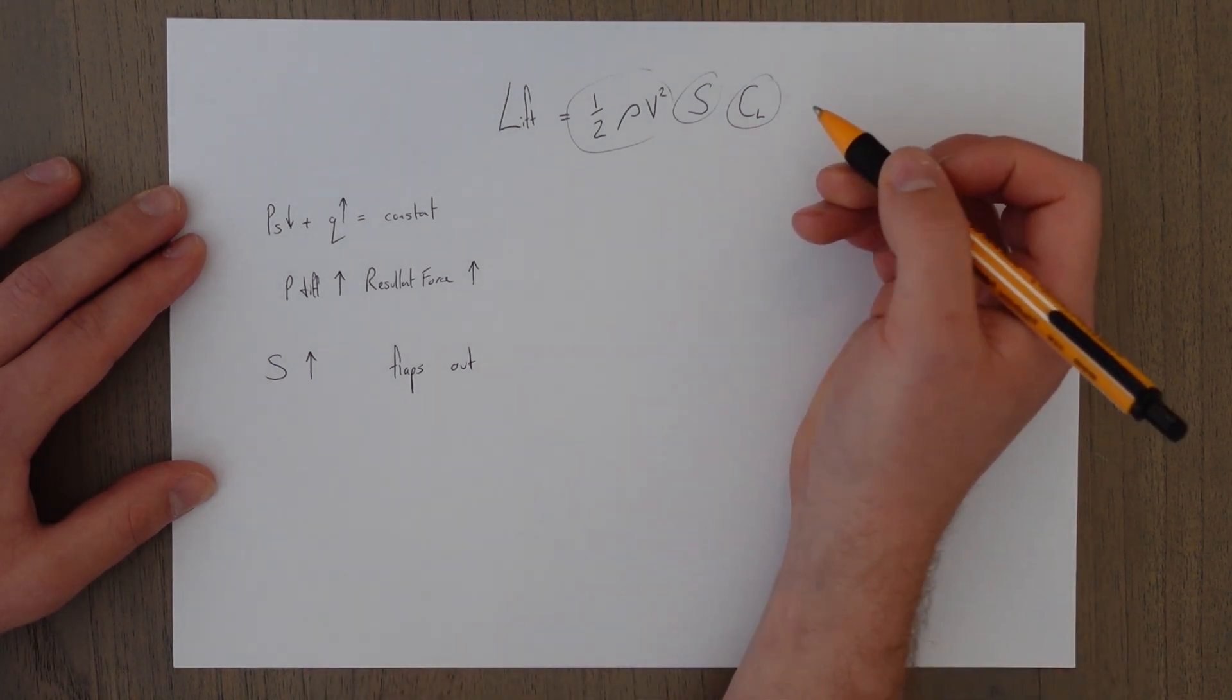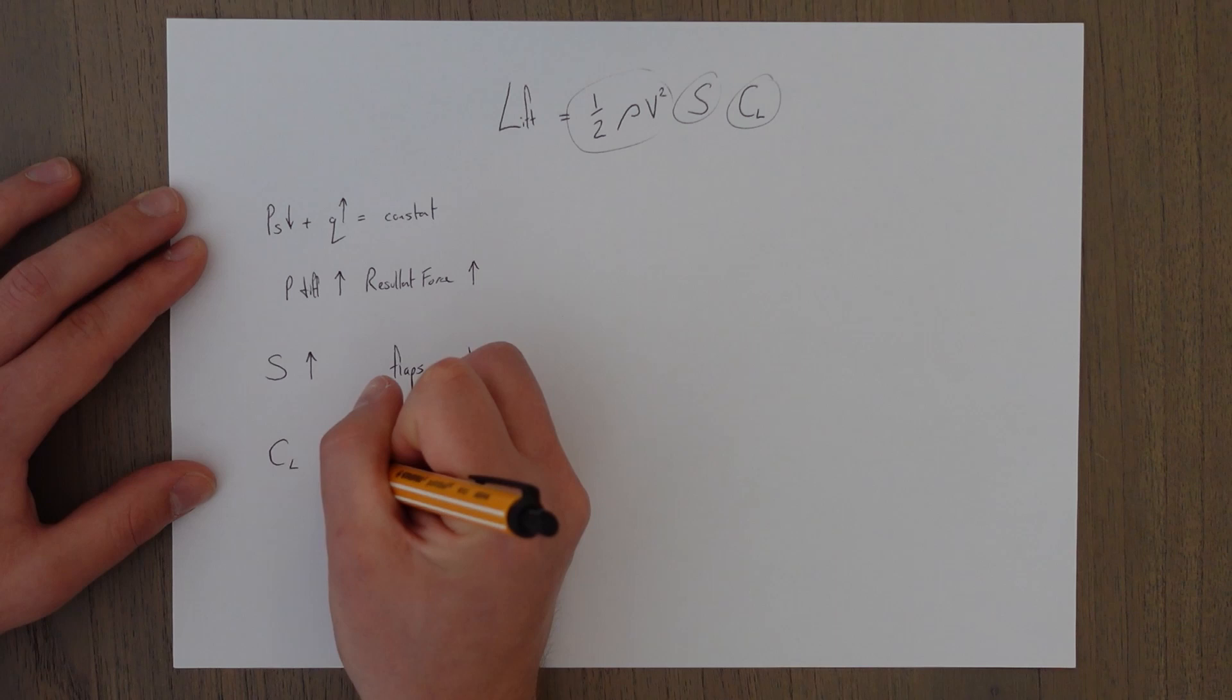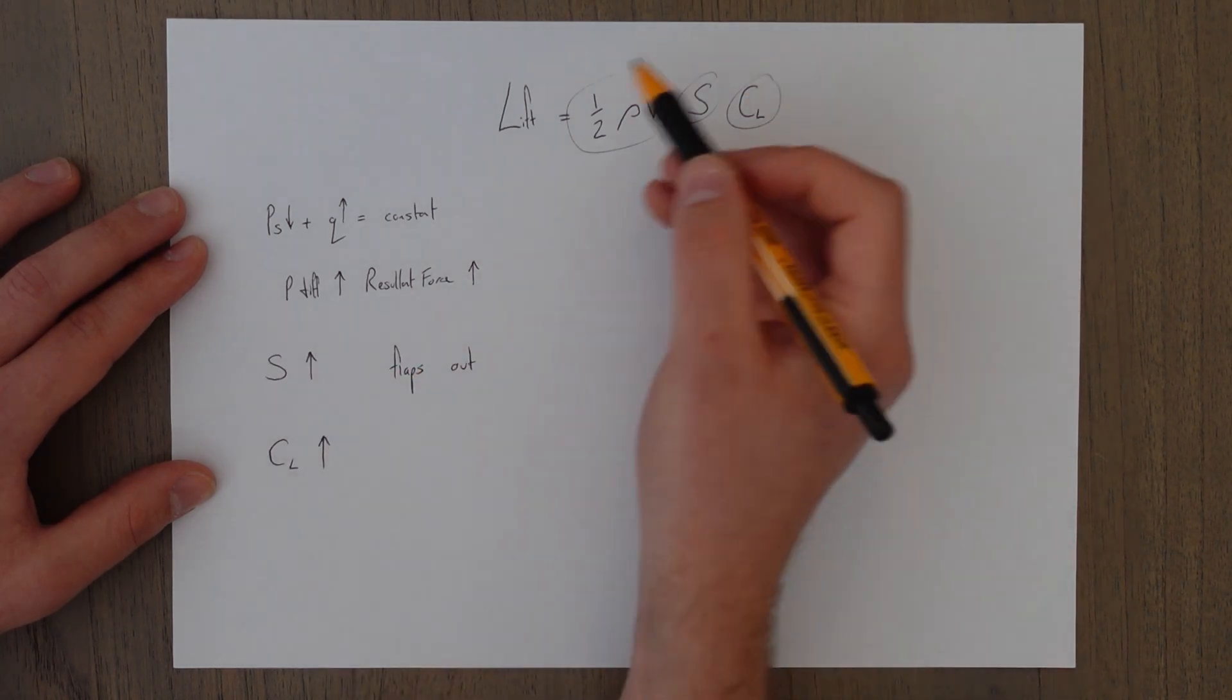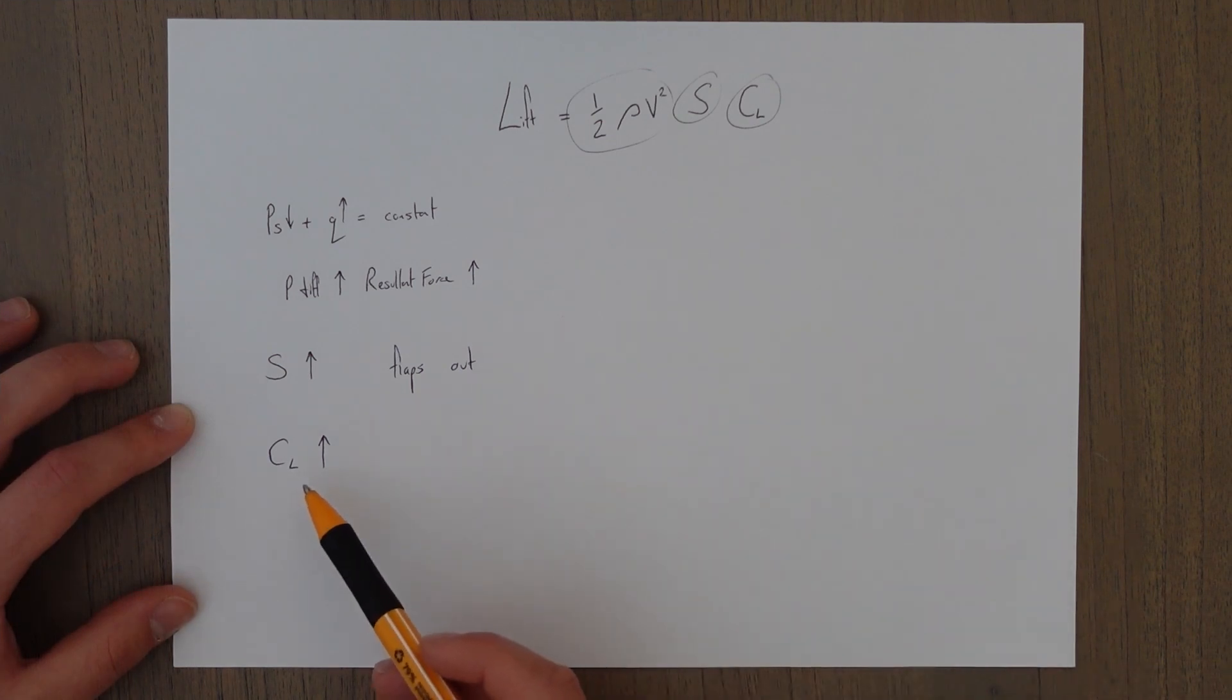The last thing to influence is our coefficient of lift. We send that up and this whole thing will go up. How do we increase this coefficient of lift then? Well we looked at the three things earlier: we looked at camber, thickness-chord ratio, and angle of attack.